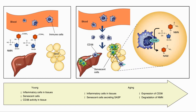Here is the main process diagrammatically. We can see the senescent cells in the liver and white fat tissue release SASP, which attracts more macrophage immune cells with CD38 on them. The CD38 converts NMN to NAM.